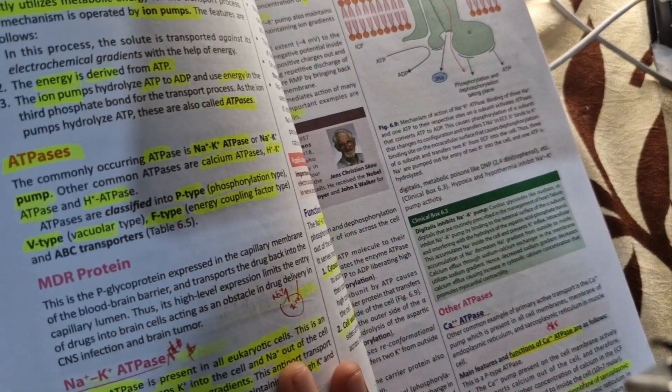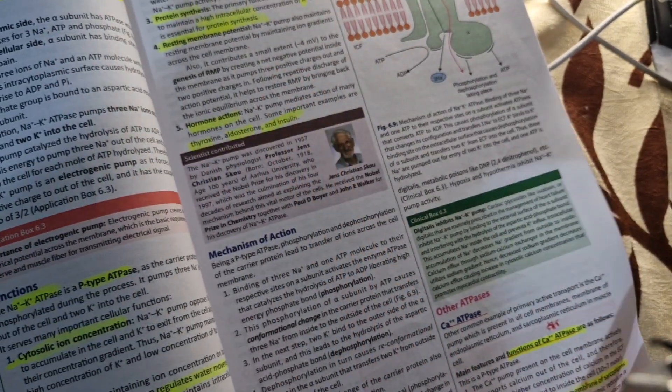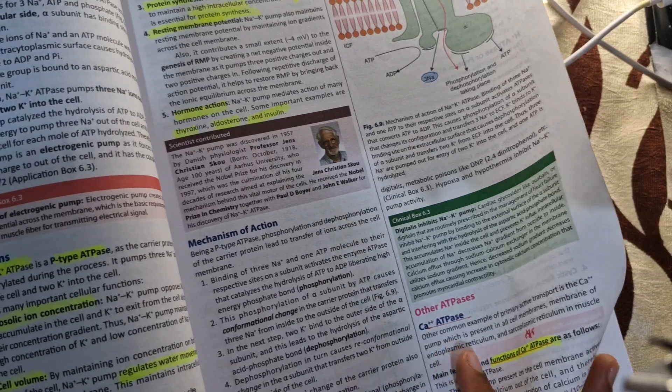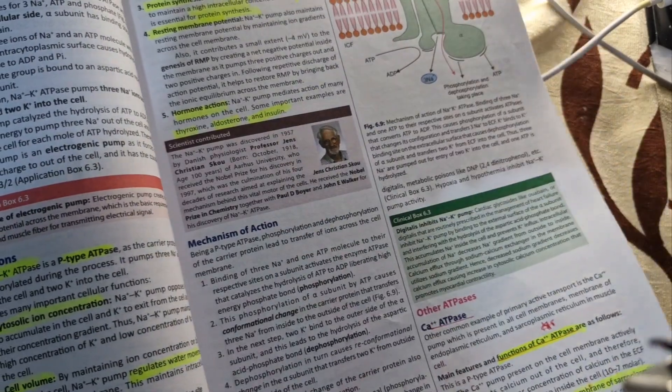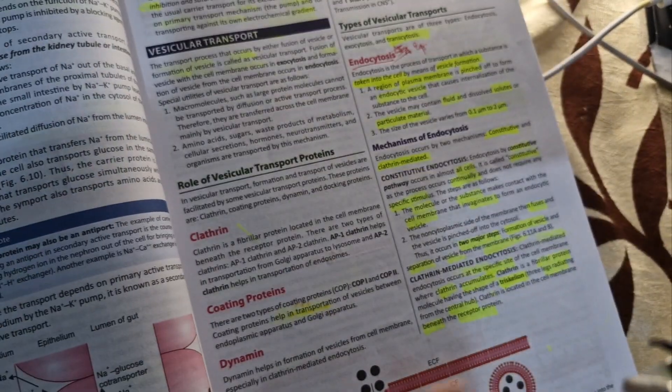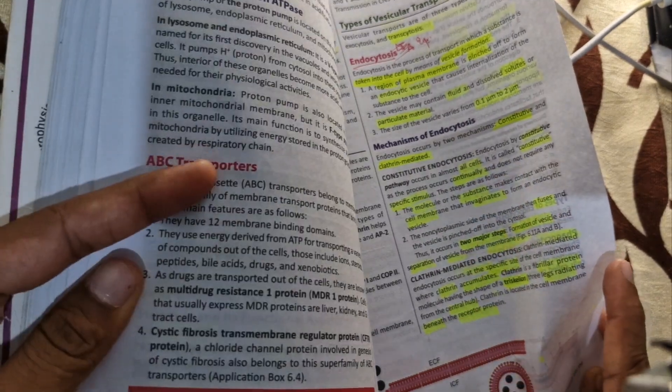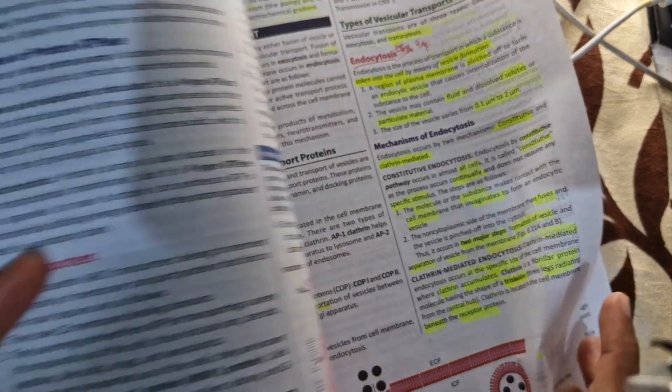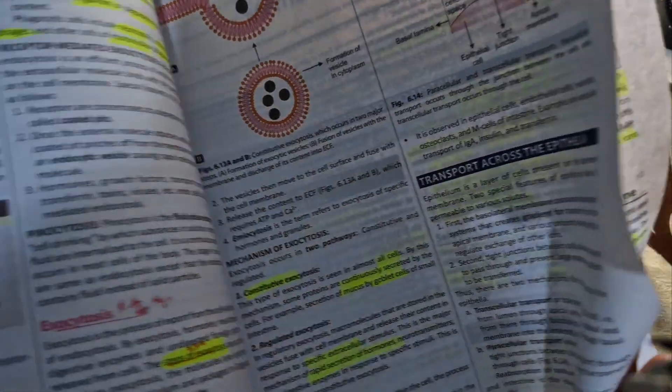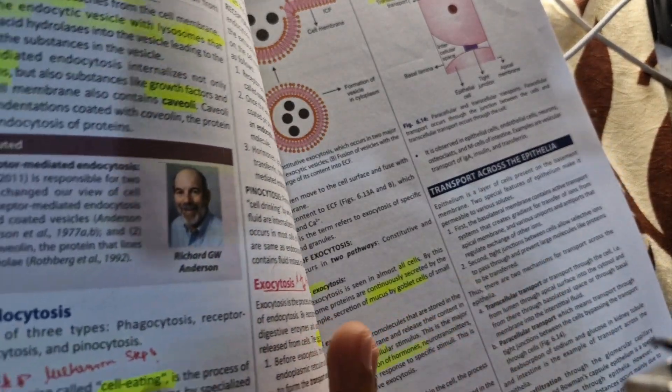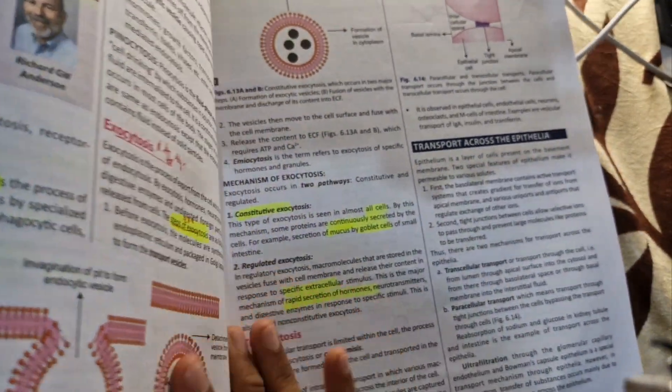Sodium potassium ATPase for 5 mark. Primary active transport. Then calcium ATPase is also asked but most important is sodium potassium ATPase. Endocytosis and secondary active transport factors examples are important. Phagocytosis and exocytosis. Phagocytosis mechanism is important. You have to draw this diagram.